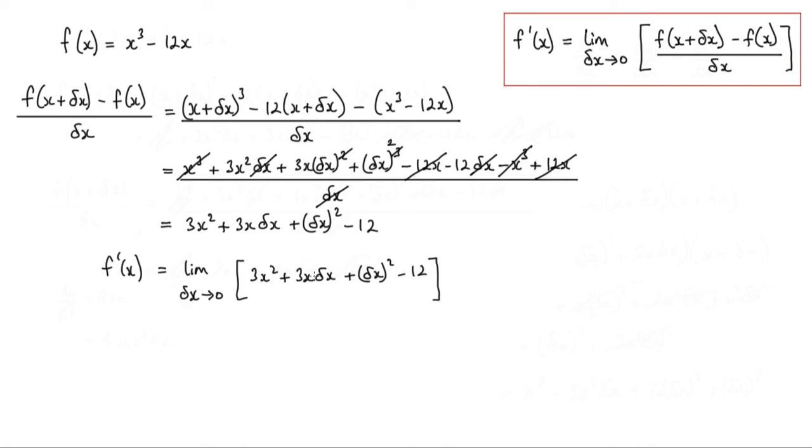Now as delta x tends to 0 this term here will be 0. This term here will tend to 0. And I'll be left with 3x squared minus 12.